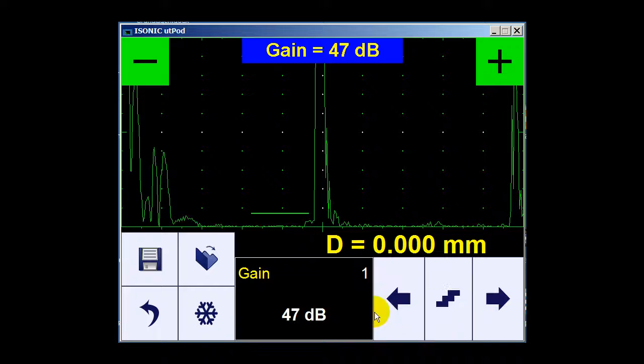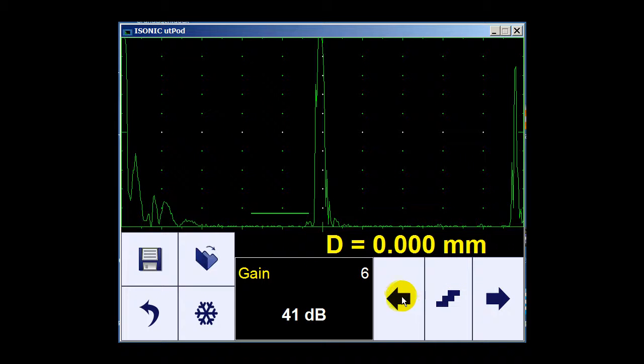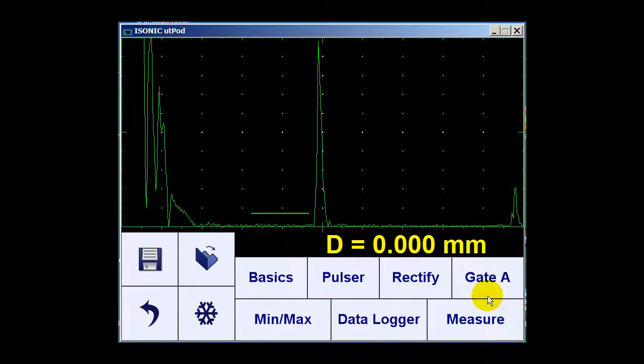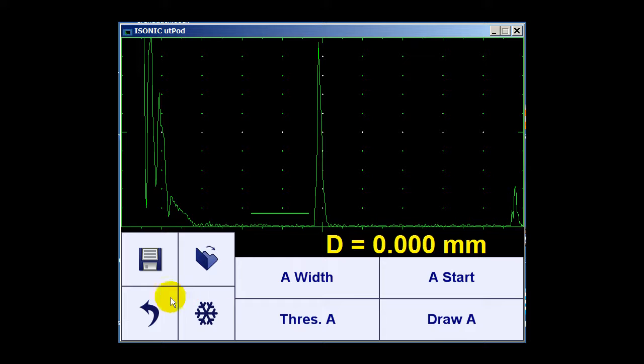We don't need that high gain, so reduce the gain slightly. Now what I do is I first set the gate over the first delay line.